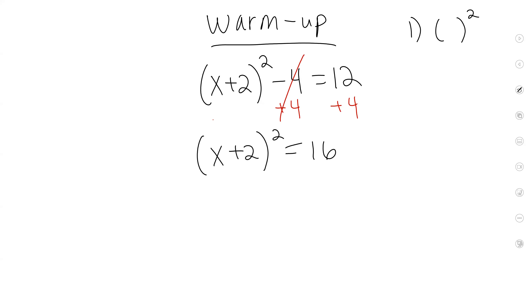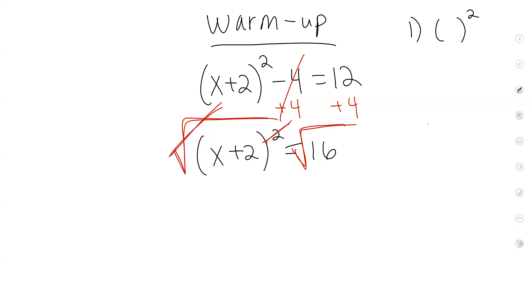Now we're going to go ahead and square root both sides. This is a mistake I saw a lot of people make on the quiz — they only square rooted this side and canceled it out, but they did not do the other side; they just kept it as 16. So what is the square root of 16? 4. And negative 4. It's 4 and it's negative 4.